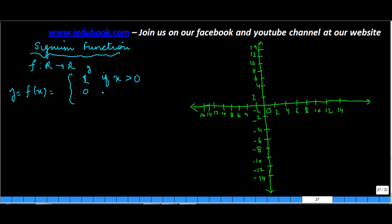y is equal to 0 if x is equal to 0, and y is equal to -1 if x is less than 0. This is called the signum function.